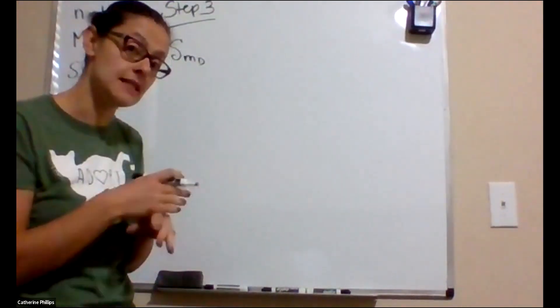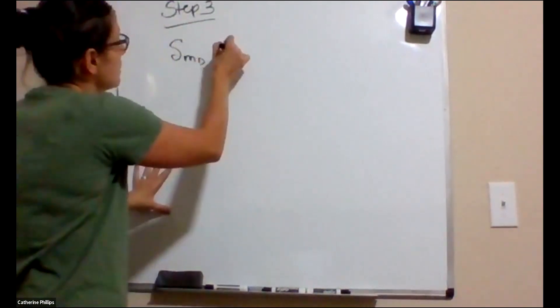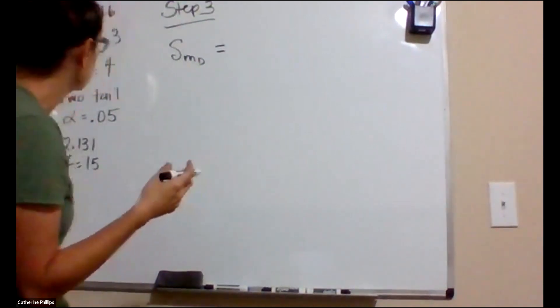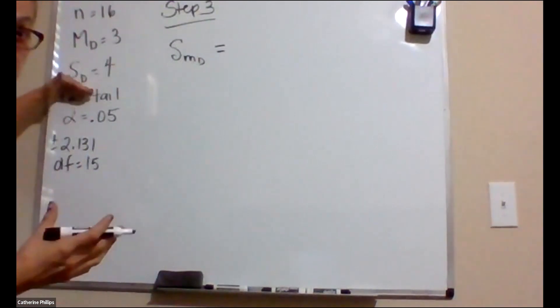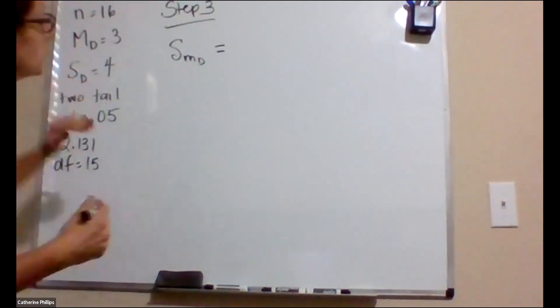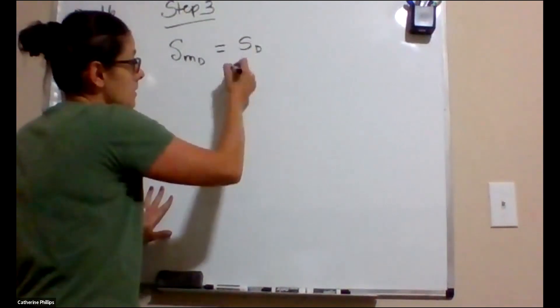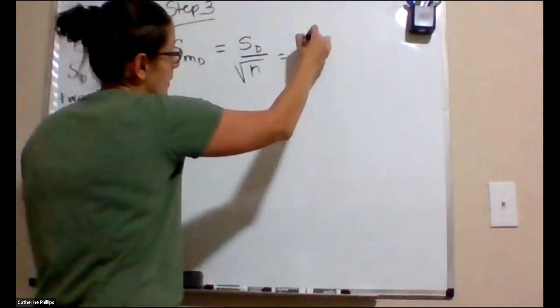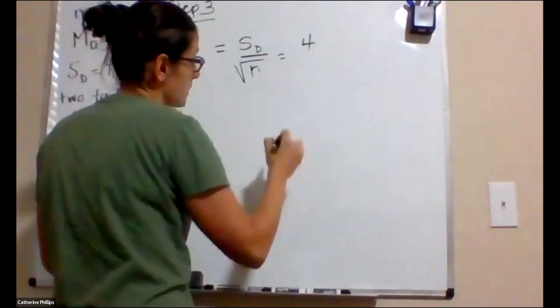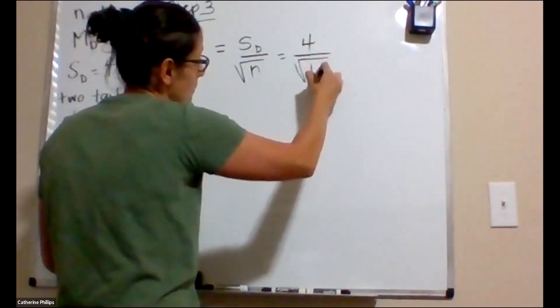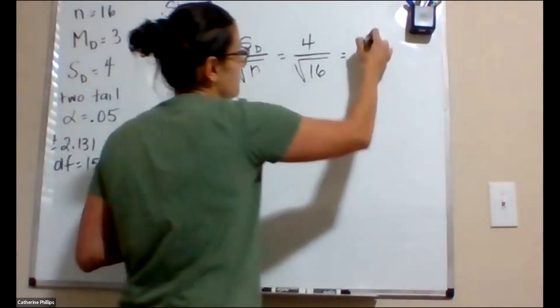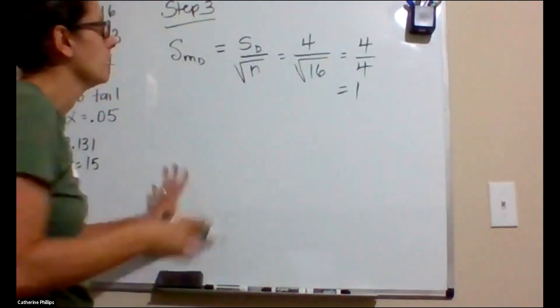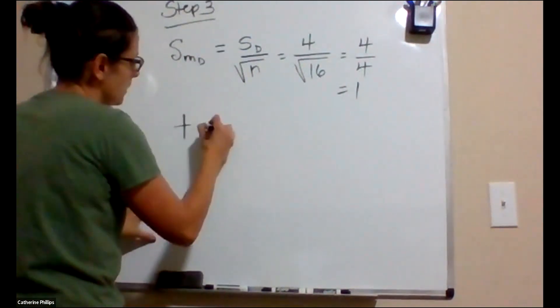With a repeated measures t-test, everything's about difference scores. The formulas we have, one uses the variance, one uses the standard deviation. Because the question gave us standard deviation, that's what we're going to use, that formula. So the standard deviation of the difference scores divided by the square root of n. The standard deviation of the difference scores was 4, and we have 16 scores. So we have 4 divided by 4, which is 1.